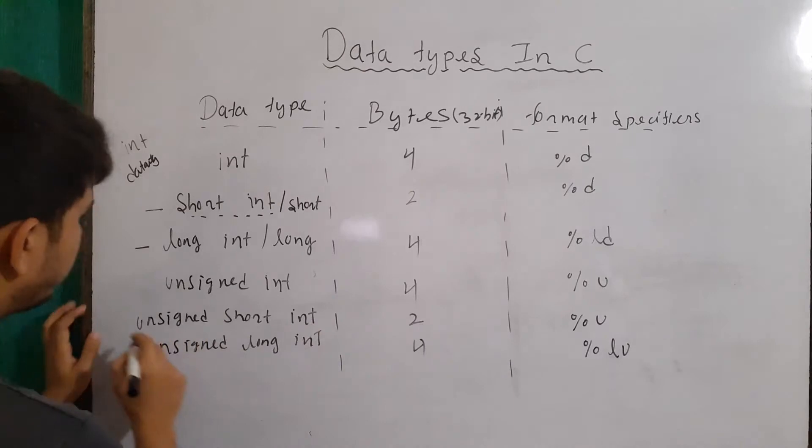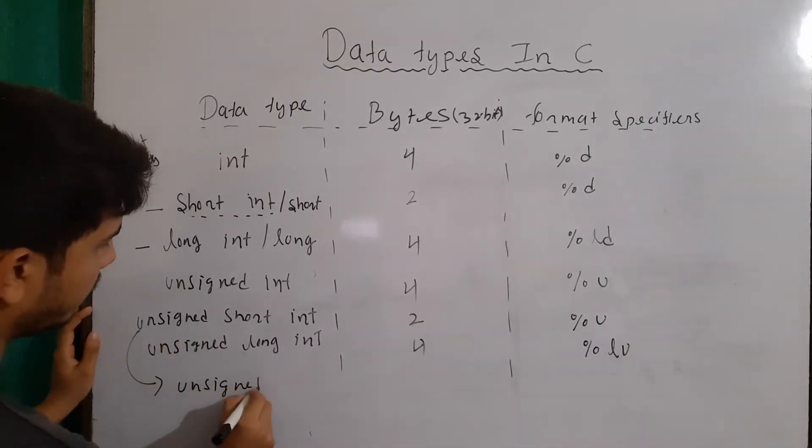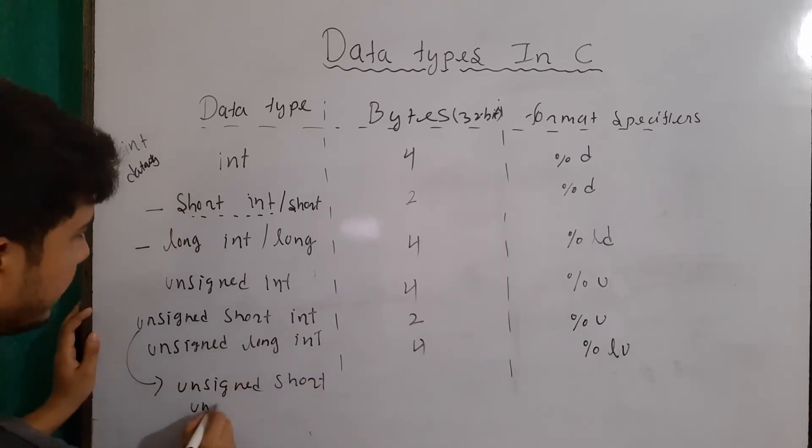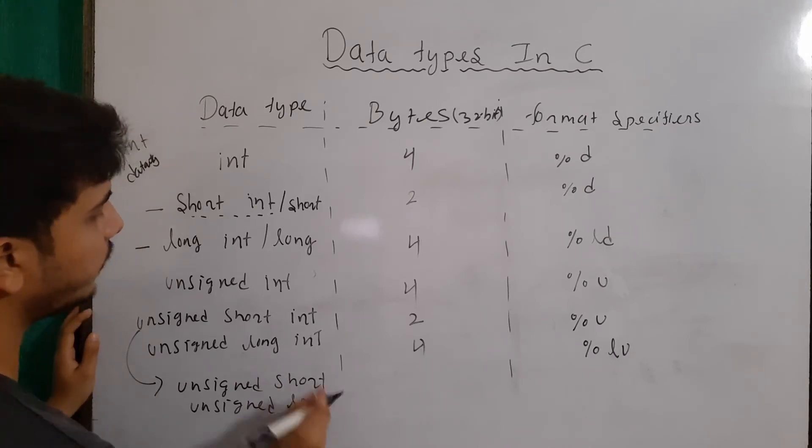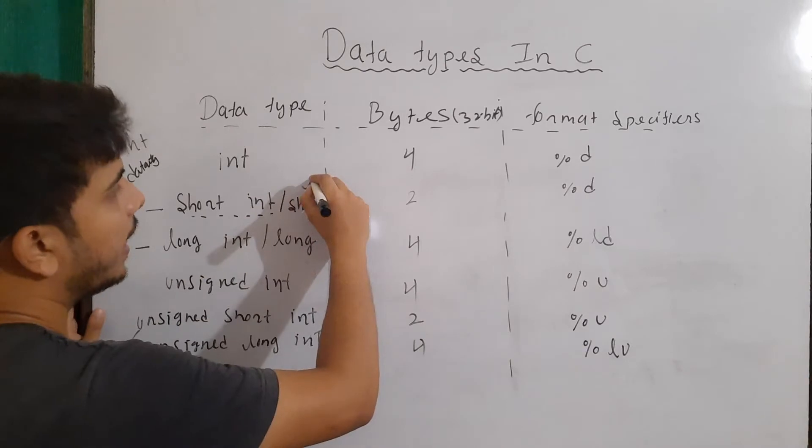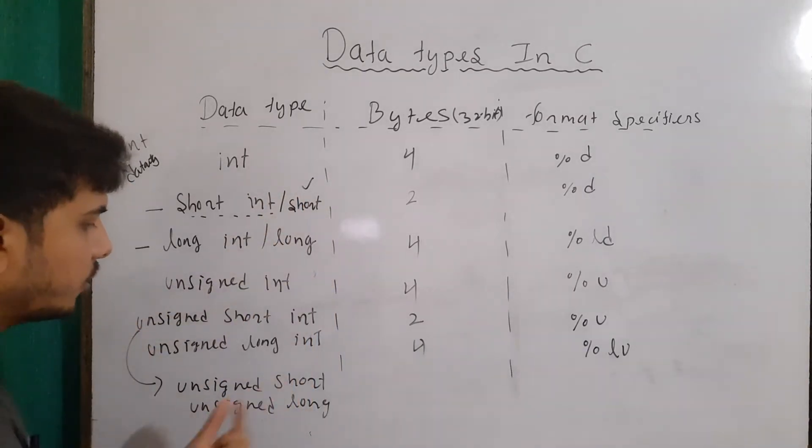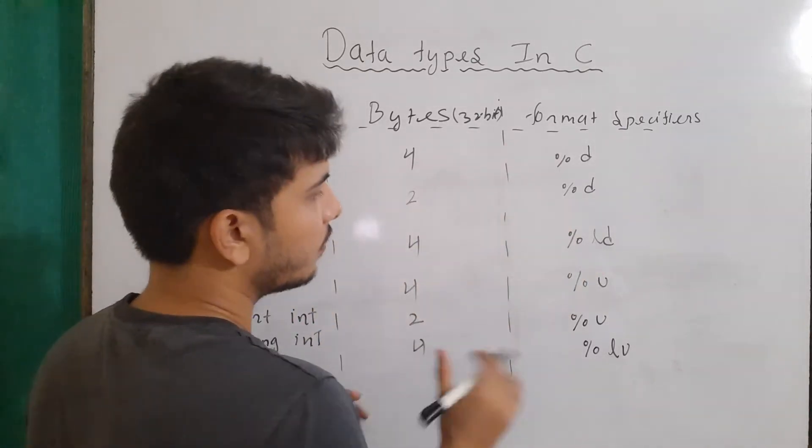Similarly, here this can also be equivalent to writing unsigned short, and this will be equal to unsigned long. You don't need to write integer every time. So remember that people generally like to use the short forms: short, long, unsigned short, unsigned long. And this will be their sizes and this will be their format specifiers.